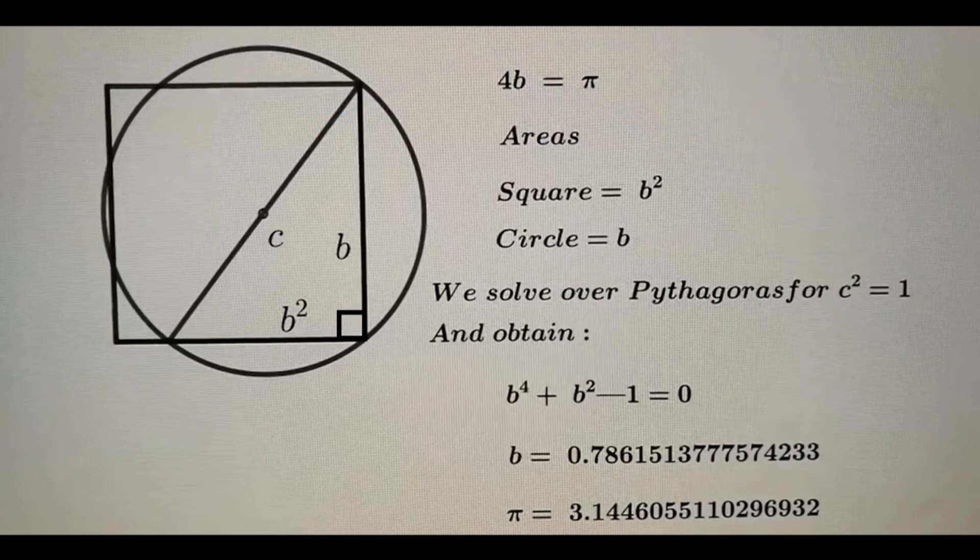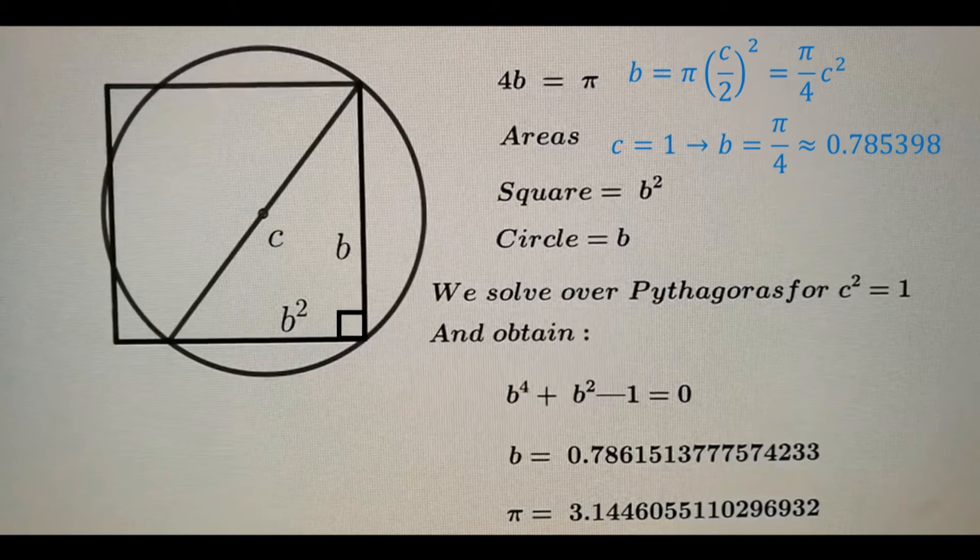So, let's start over with what we know. Variable B is equal to pi over 4 times c squared. But since variable c equals a constant, 1, then B equals a constant, pi over 4.